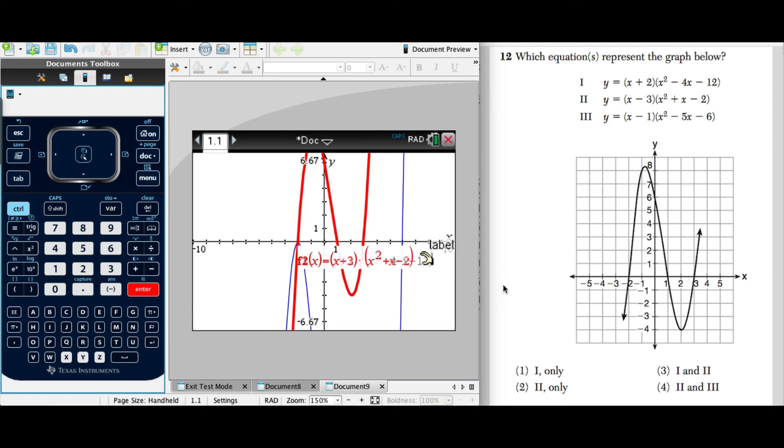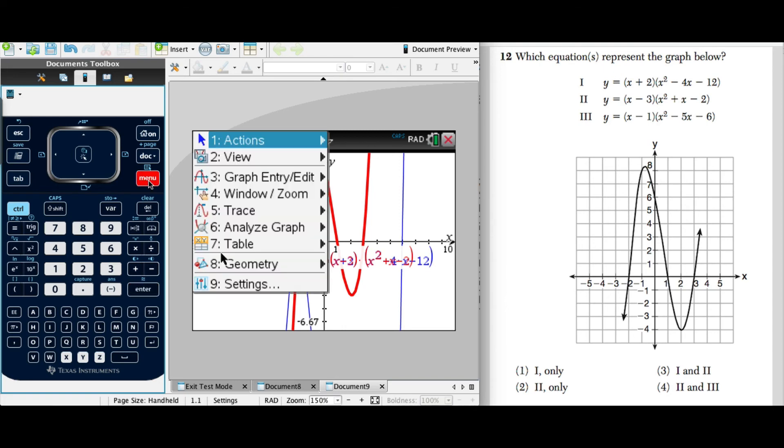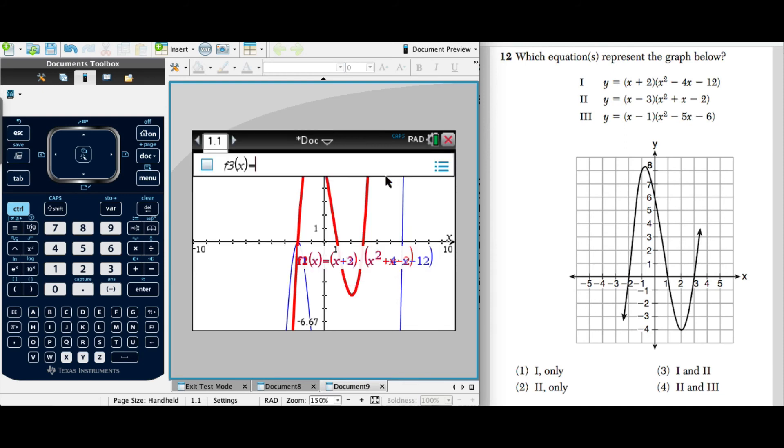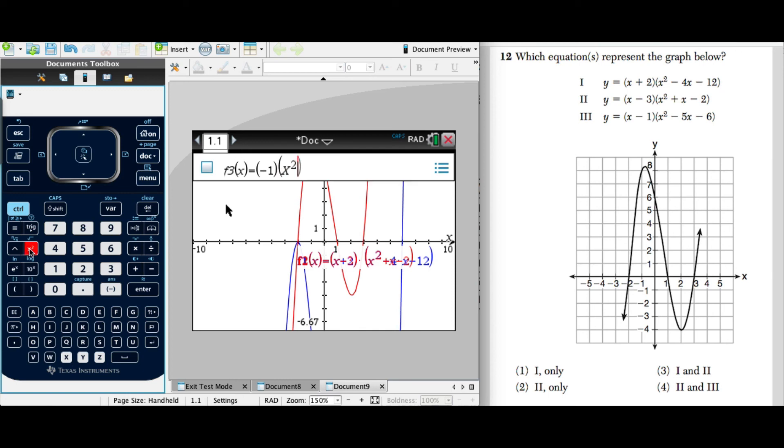Now all we have to do is look at number 3, and then we can answer the question. So again, we are going to hit our menu button, and we're going to choose function once again. And we'll type in that last equation. So we have Y equals X minus 1, again, closing the parentheses. X squared minus 5X minus 6.